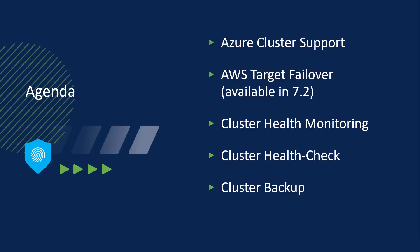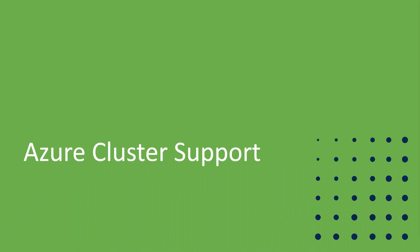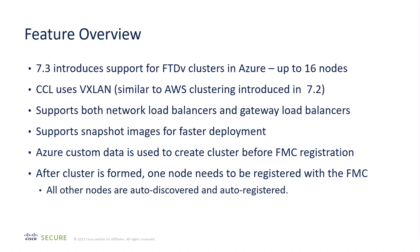With each release, we enhance clustering, and here is a collection of enhancements I will be discussing today. First is Azure cluster support. We've extended clustering for the Cisco Secure Firewall to Azure, up to 16 nodes. This is very similar to our AWS clustering introduced in 7.2. The cluster control link uses VXLAN over UDP to communicate. It supports both the network and gateway load balancers native to Azure. It supports snapshots, and you have to use custom data to bootstrap the cluster.